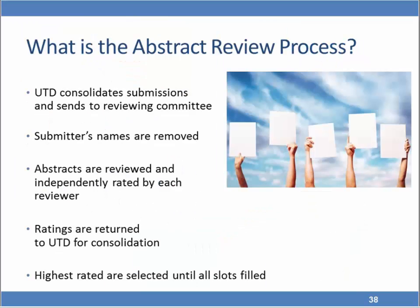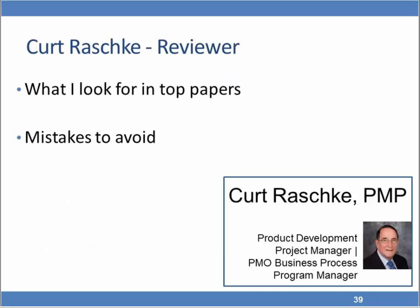What is involved in the abstract review process? UT Dallas consolidates all submissions and sends them to the reviewing committee. Before sending them, the submitters' names are removed — these abstracts are completely anonymous to the reviewing committee. The abstracts are independently rated by each reviewer, ratings are returned to UTD, UTD consolidates them and adds up the scores, and the highest-rated scores are selected until all available time slots are filled.